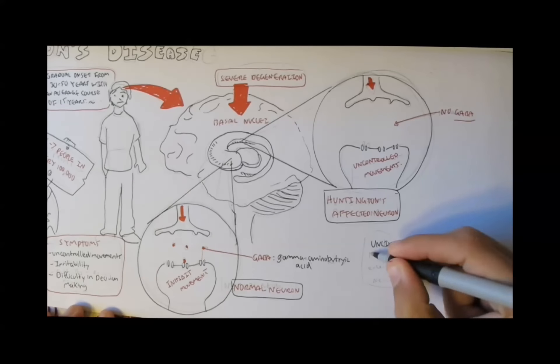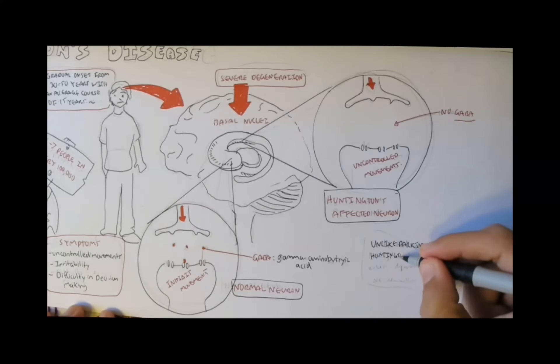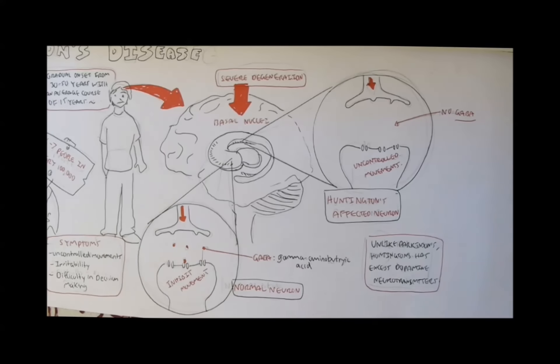Unlike Parkinson's, Huntington's disease has normal dopamine levels, because it can still initiate precise movements. But once you want to stop a movement or change direction of a movement, such as stretching or swinging your arm, there is no GABA to stop the movement. And so you basically keep moving, like dancing, chorea. And that is a symptom associated with Huntington's.